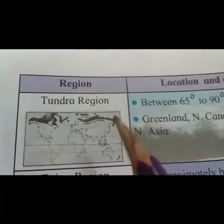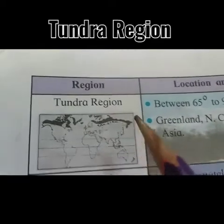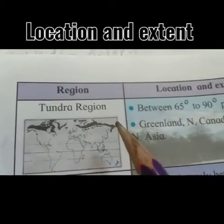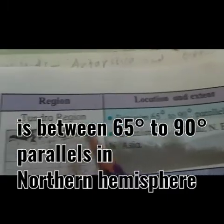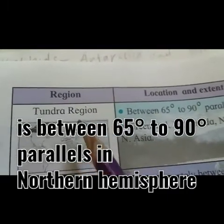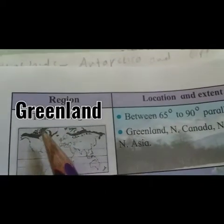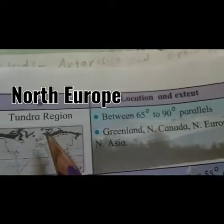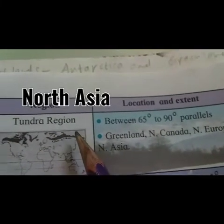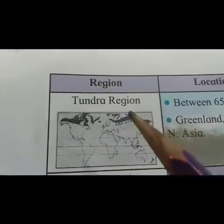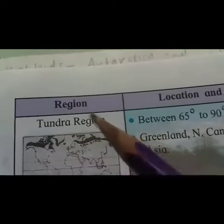Next natural region: the Tundra region. The location and extent of the tundra region is between 65 degrees to 90 degrees parallels in the northern hemisphere. Greenland, North Canada, North Europe, and North Asia are locations where the tundra region lies.